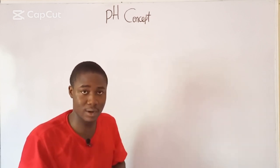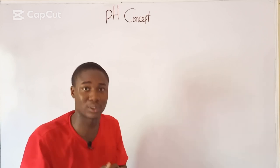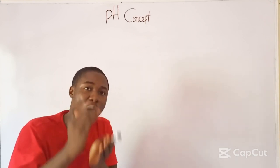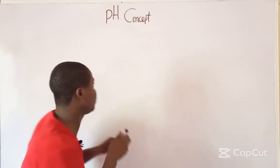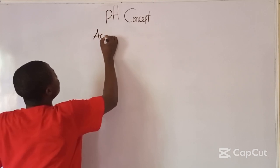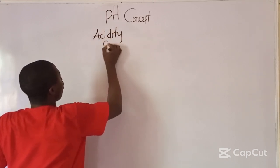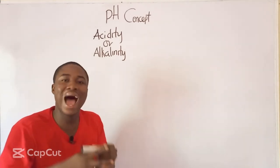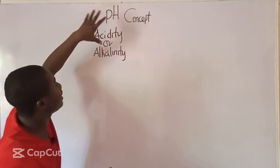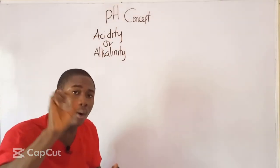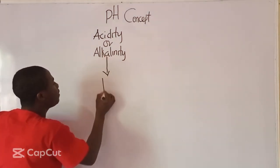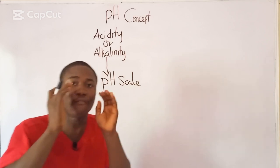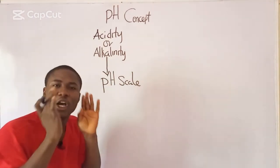The first question we have to ask ourselves: what is the pH concept actually talking about? It must be noted that the pH describes the degree of acidity or alkalinity of a solution. The scale used to measure the degree of acidity or alkalinity of a solution is simply called the pH scale.